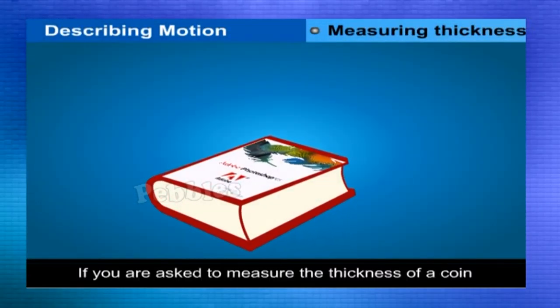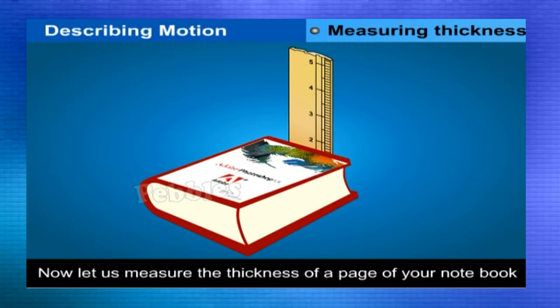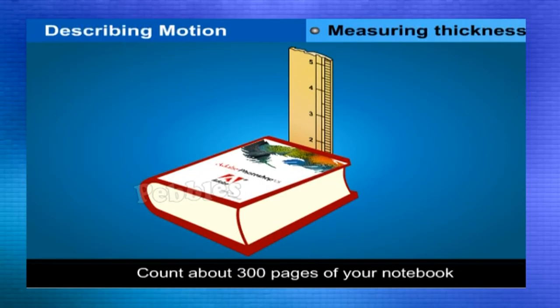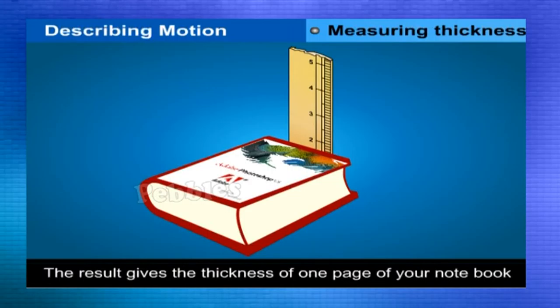Measuring small thicknesses. If you are asked to measure the thickness of a coin or of a playing card or of a page of your book, you cannot use a meter scale directly. Now let us measure the thickness of a page of your notebook. Count about 300 pages of your notebook. With the help of a measuring scale, measure the total thickness of these pages. Divide the thickness by the total number of pages. The result gives the thickness of one page of your notebook.